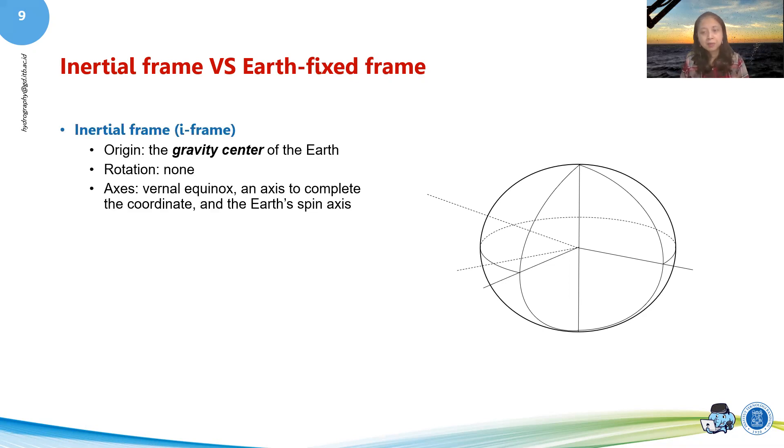So firstly, the inertial frame, or we can call it I-frame, the origin is the gravity center of the Earth. So that's basically quite similar with the center of the Earth. For our purposes, for navigation, for hydrographic surveys, we can say that it's basically the same, more or less. It doesn't make too much difference. And then it has no rotation. This is the most important part. It has no rotation. And the axes are the vernal equinox, which is basically a star in the sky, a fixed star. So that's our X. Then our Y is basically perpendicular to that vernal equinox to complete that coordinate system. And then the Z is basically the Earth's spin axis. So that is our inertial frame.